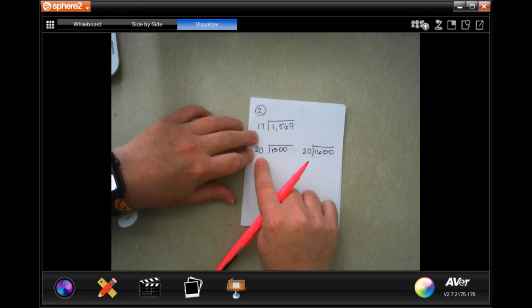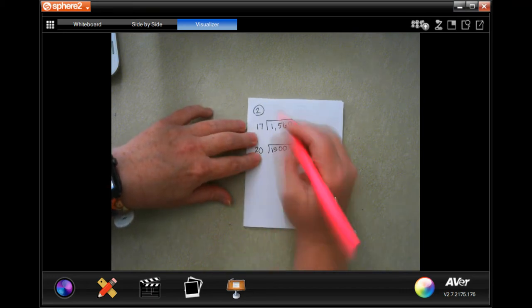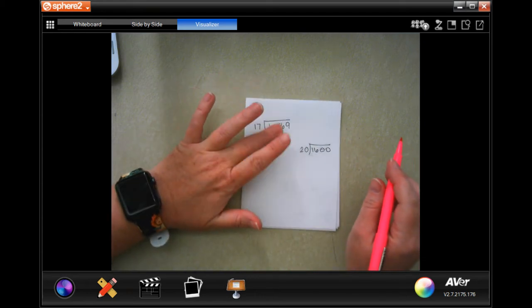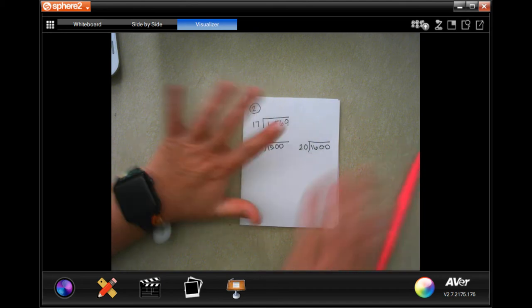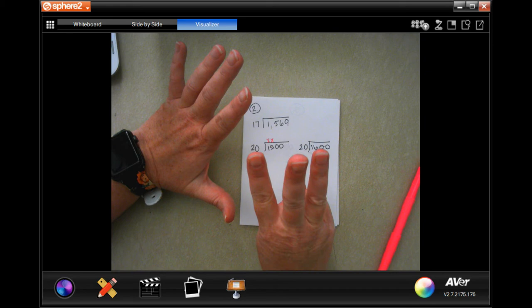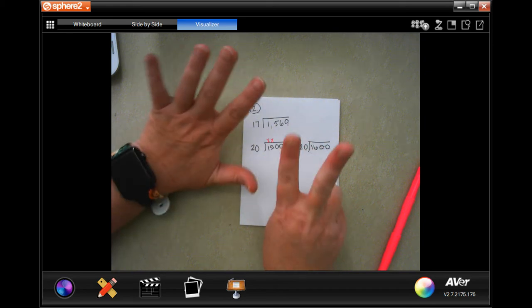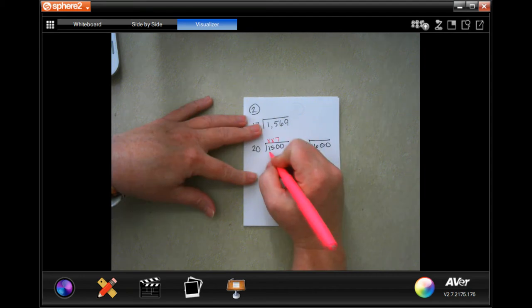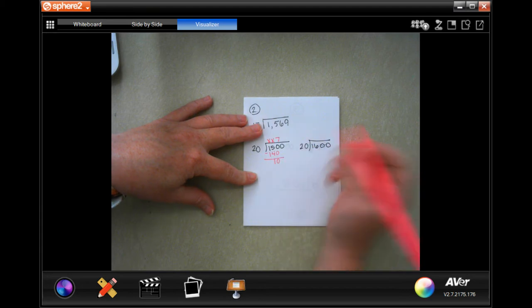So 20 is not going to go into 1, and it's not going to go into 15. It'll go into 150. If we do 20, 40, 50, 80, 100, that's 5. And then 20, 40—if we do 60 that's too much. So it's going to be 7. 7 times 20 is 140.